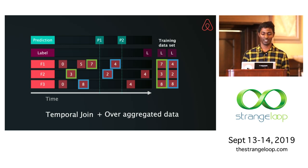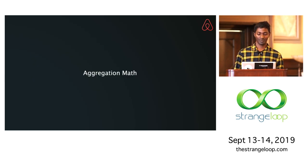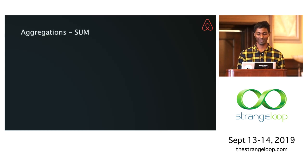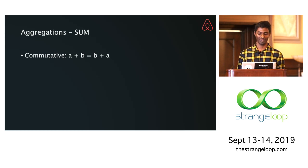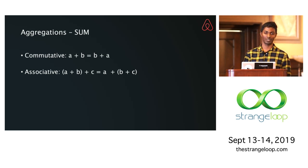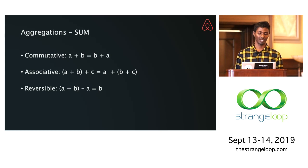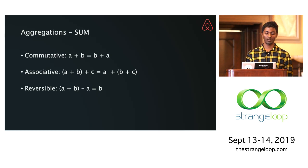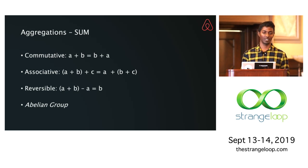Before we jump into the algorithm, let's understand a few properties about aggregations. A sum is what's called commutative — you can sum over any order of elements, which means you don't need an expensive sorting step before you aggregate. It is also associative, so you can arbitrarily split your data across nodes and combine the sums later. The other property is reversibility, which means you can reverse data off of aggregations. These properties make sum what's called an abelian group.